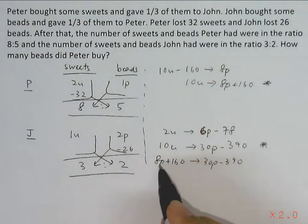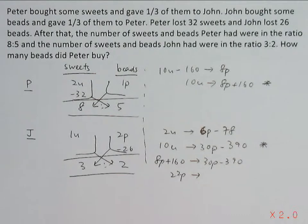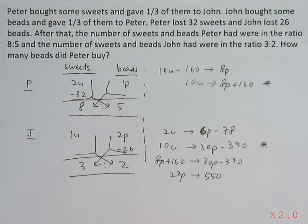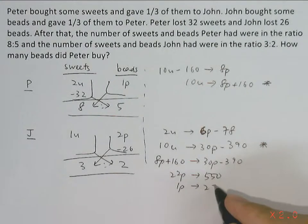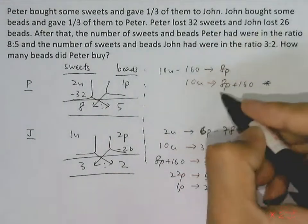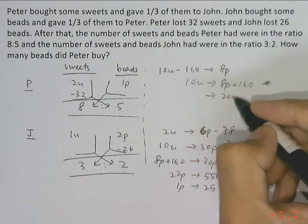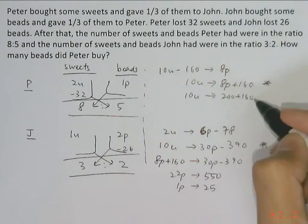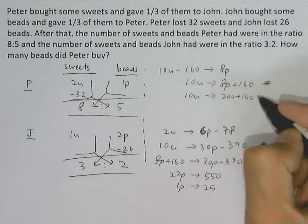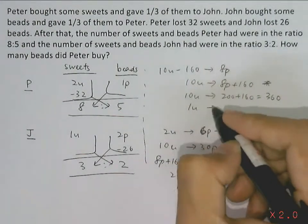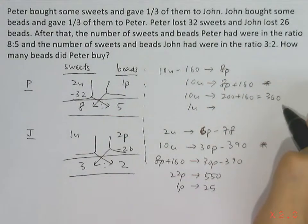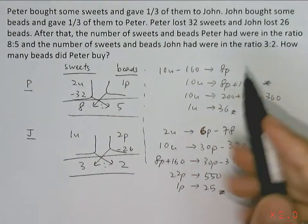The difference between 8 parts and 30 parts is 22 parts, and the difference between 160 and negative 390 is 550. So 1 part equals 550 divided by 22, giving 1 part equals 25. Then 8 parts equals 25 times 8 equals 200, plus 160 gives 10 units equals 360, so 1 unit equals 36.